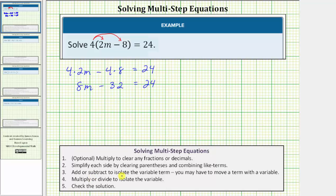Next step is to add or subtract to isolate the variable term. We want to isolate the eight m term. So we don't want this minus 32 here. To undo minus 32, we must perform the opposite or inverse operation to both sides of the equation.